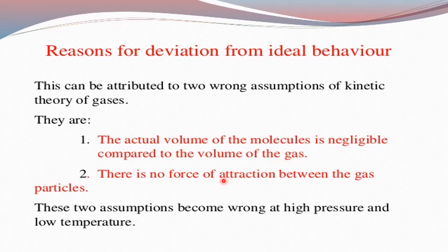The second faulty assumption is that there is no force of attraction between gas molecules. This holds for an ideal gas, but for real gases, molecules attract each other. Every molecule is surrounded by other molecules that attract it. There is indeed a force of attraction between molecules of real gases. Because of these two faulty assumptions in kinetic molecular theory, we get deviations from ideality.